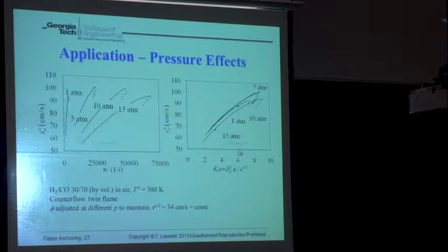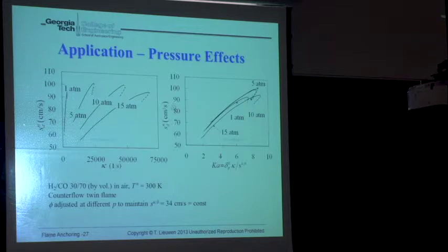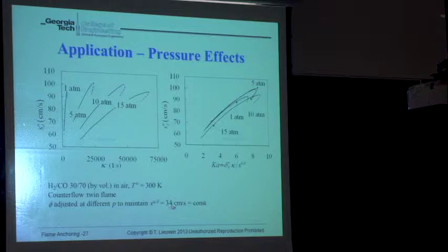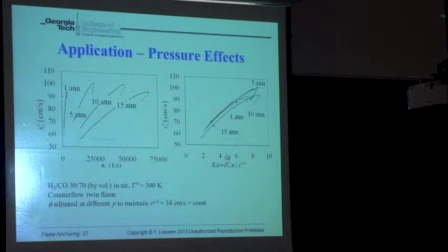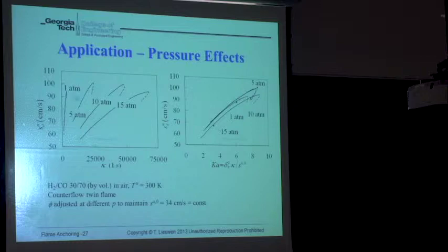This is the same calculation but now I've rescaled the x-axis, normalizing by the unstretched flame thickness and flame speed. The flame thickness is different at each pressure. What you notice is the curves almost collapse on top of each other — which clearly shows that the change in sensitivity is a flame thickness effect. As the flame gets thinner, it becomes less and less sensitive to stretch.